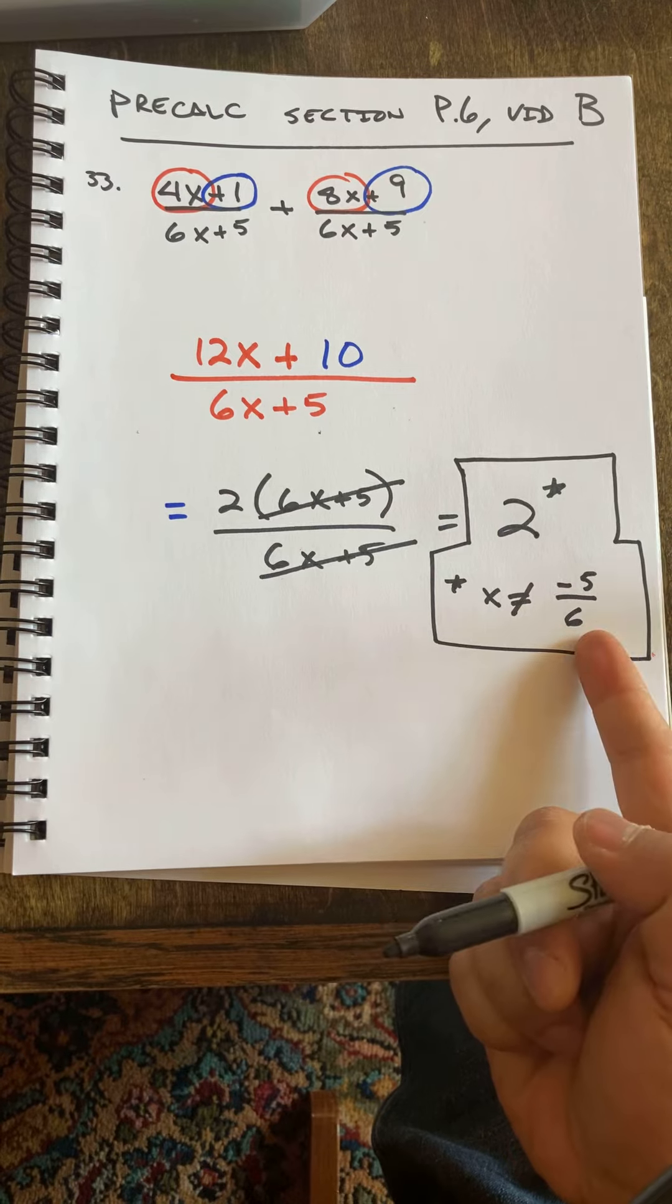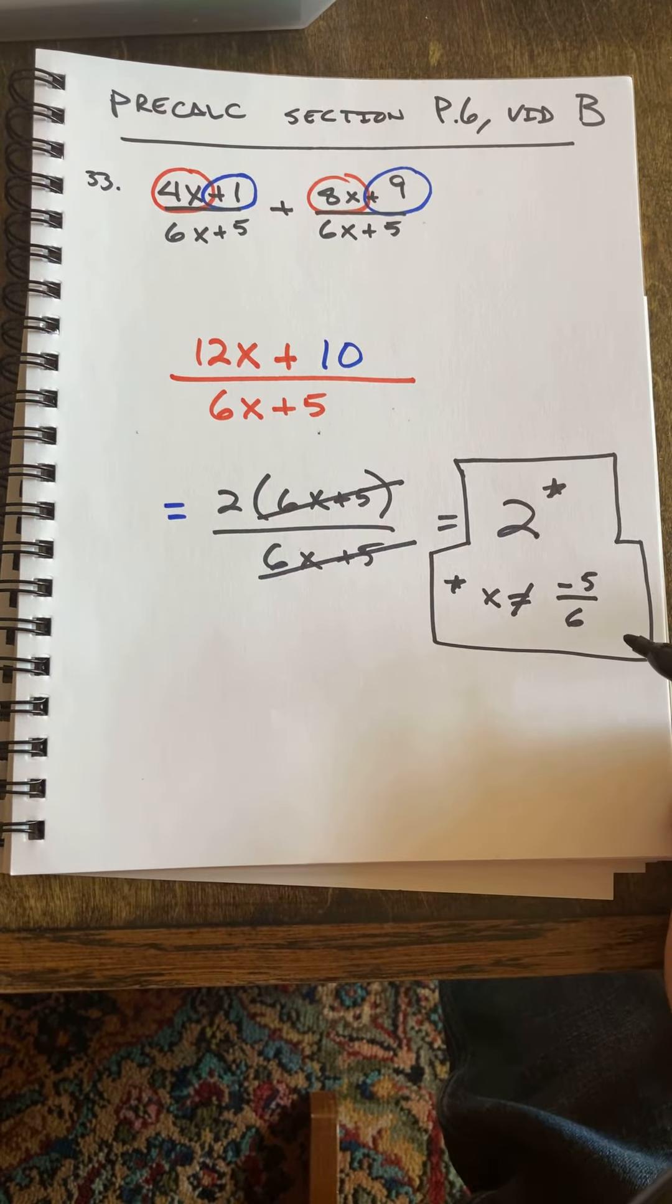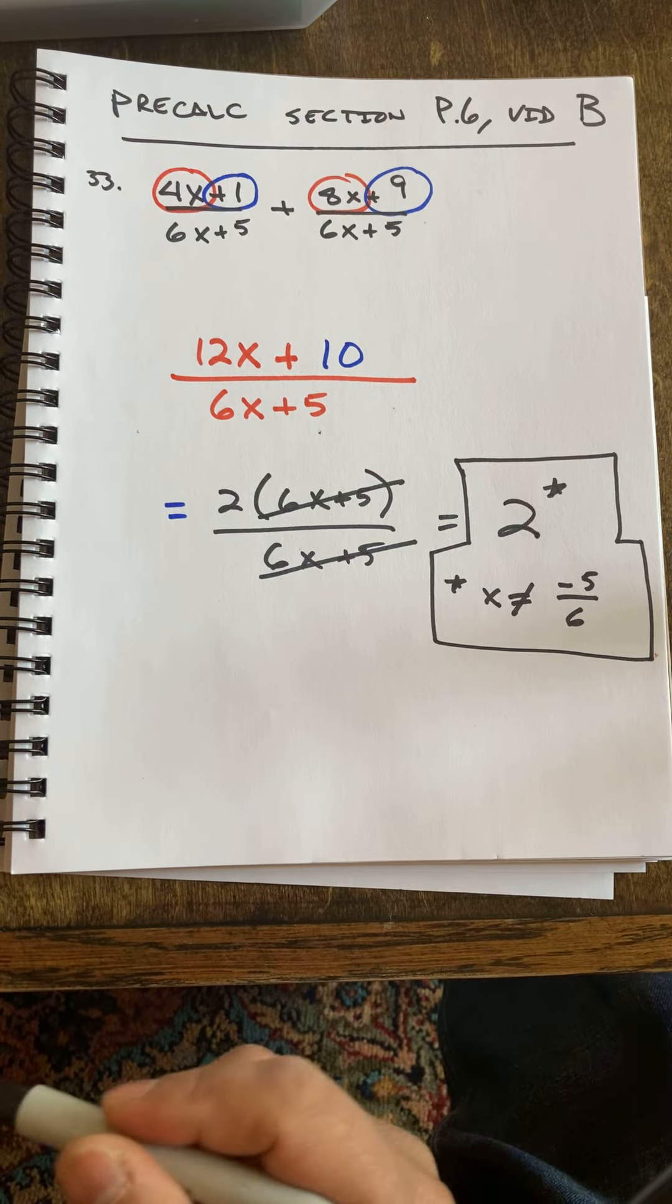And I'm putting that in there because I don't want division by 0. Division by 0 is bad.